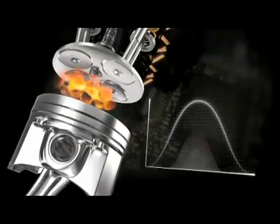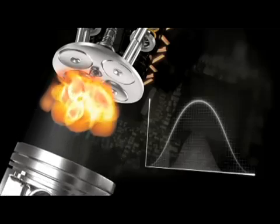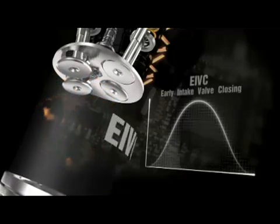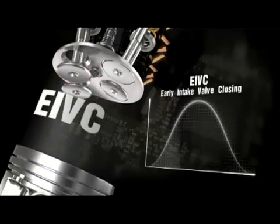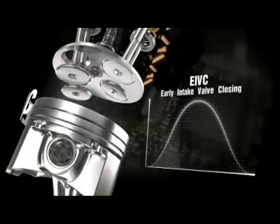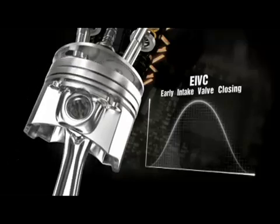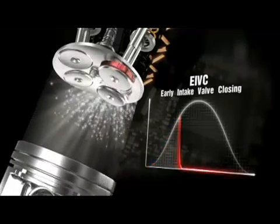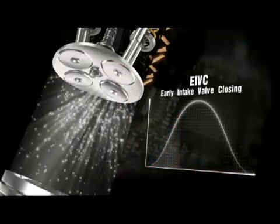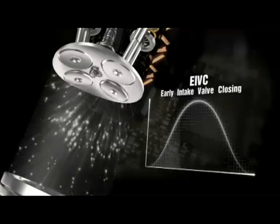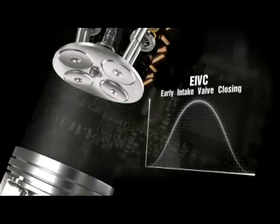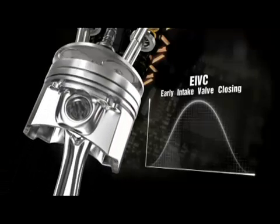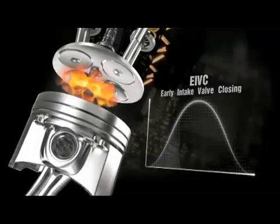At medium-low RPM torques and engine partial load, EIVC — early intake valve closing — optimizes volume efficiency and reduces pumping losses. Undesired back flow into the manifold is avoided, and air mass trapped in the cylinder is optimized.